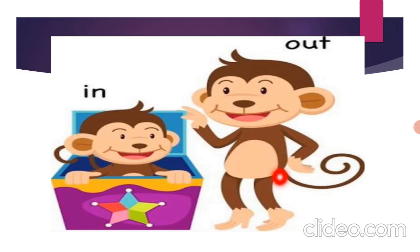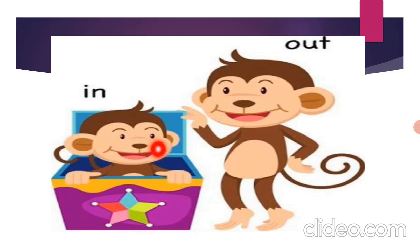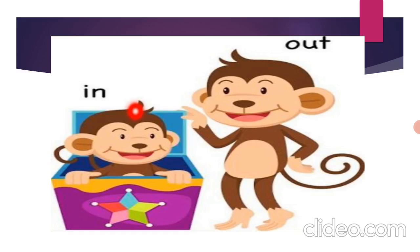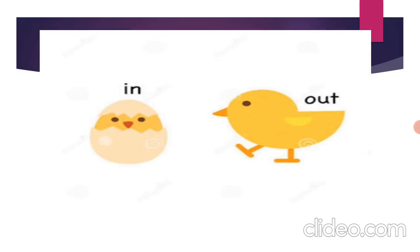Now, next, over here there are monkeys. Mama monkey is standing out of the bed, and baby monkey is inside the bed — it is in the bed. So the one who is out is called 'out', and the one who is sitting inside is called 'in'.